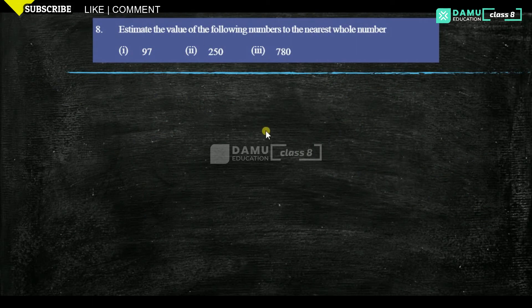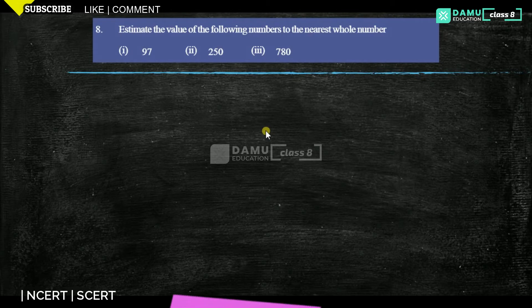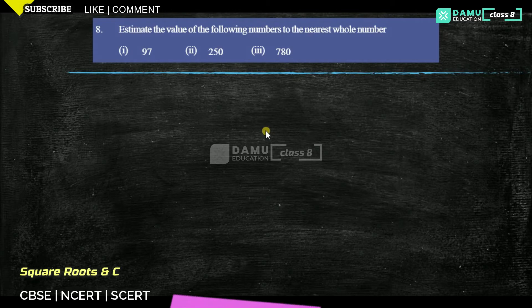In this next module we are going to discuss: estimate the value of the following numbers to the nearest whole number. The numbers are square root of 97, square root of 250, and square root of 8780.